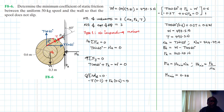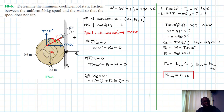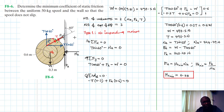So 0.5773 is the minimum value of the coefficient of static friction required at that point so that the spool does not slip. I hope this video was helpful — give it a thumbs up, keep subscribing and liking the channel. See you in the next screencast!